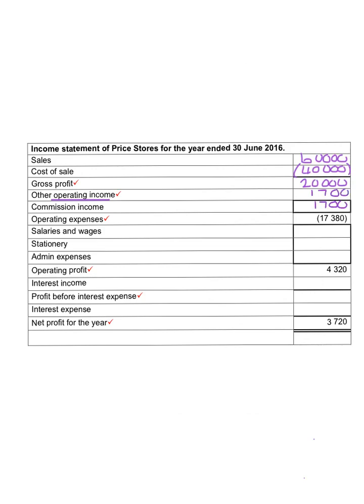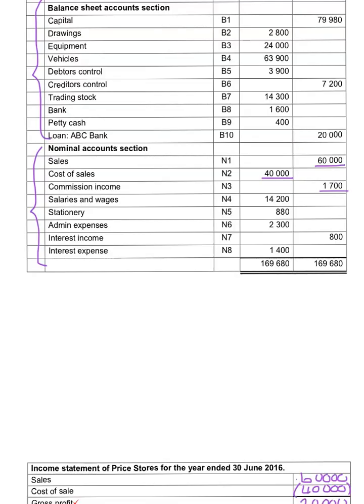We then have to look at all the expenses that were paid in the business. Salaries is 14,200. Stationery is 880. And admin expenses are 2,300.